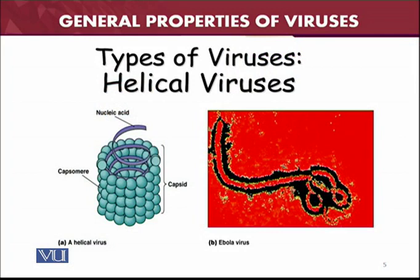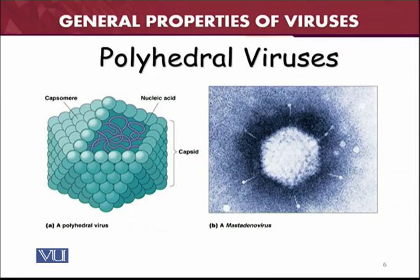On the left side is a helical-shaped virus — for example, the Ebola virus — showing the nucleic acid and the capsid, which is made up of capsomeres. On the other side is the electron microscope image of the same Ebola virus. For polyhedral viruses, we take the example of the adenovirus — you can see the corners clearly on the left side, showing the nucleic acid and capsid made up of capsomeres, along with its electron microscope image.